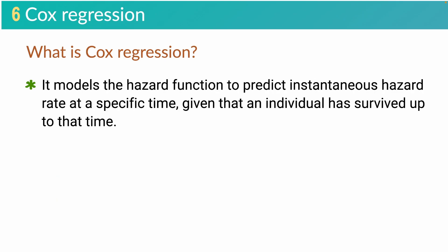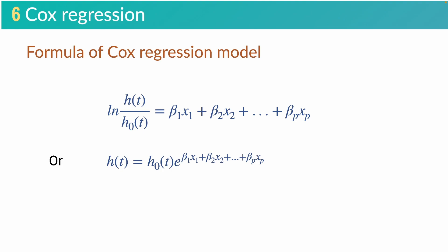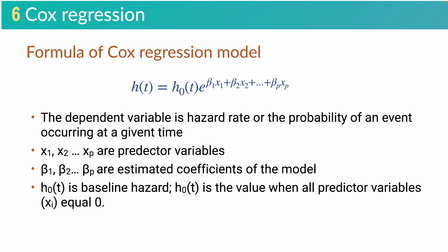It models the hazard function to predict an individual's hazard rate at a specific time, given that the individual has survived up to that time. This is the formula of the Cox regression model. The model is an exponential model and it is based on hazard rate. The dependent variable is hazard rate, or the probability of an event occurring at a given time. The X variables in the model are predictor variables, and the beta values are estimated coefficients.